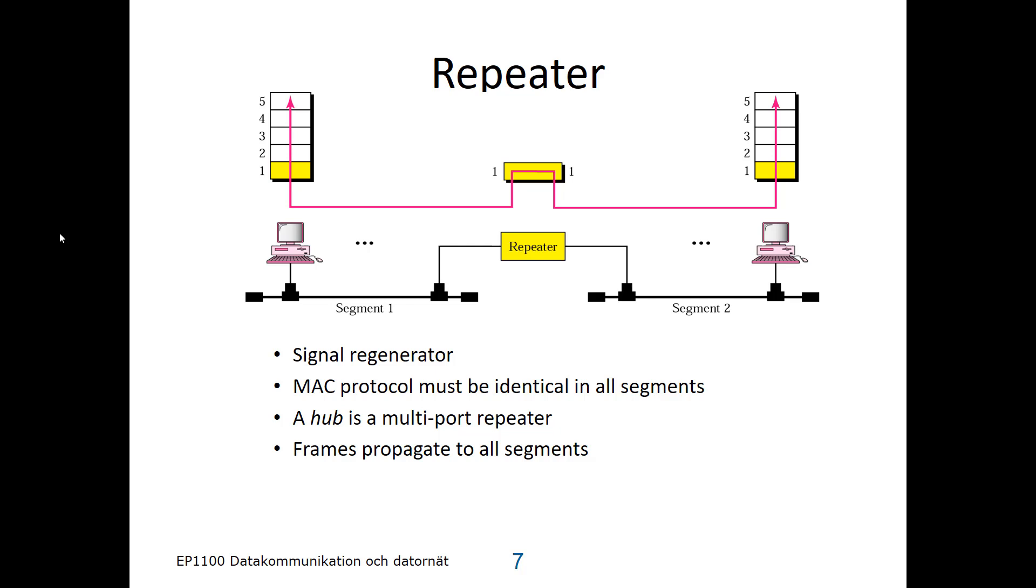So if it would use CSMA/CD with collisions, it would be one collision domain for the whole network. And frames that are sent by one node propagate to all the receivers on all the segments of the extended local area network.